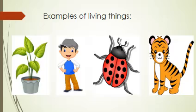Here we have different examples of living things so you can understand easily. Plants, humans, insects, and animals — these are all living things because they can move, they can grow, they can reproduce, and they take nutrients in the form of water and food.